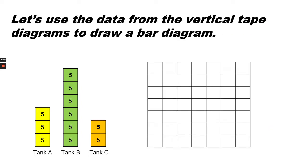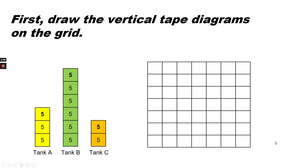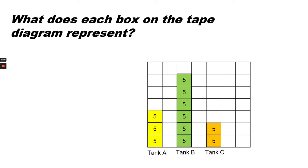Let's use the data from the vertical tape diagrams to draw a bar diagram or a bar graph. What does each box on the tape diagram represent? Each box represents 5 fish in a tank.